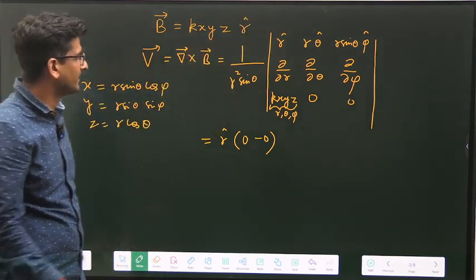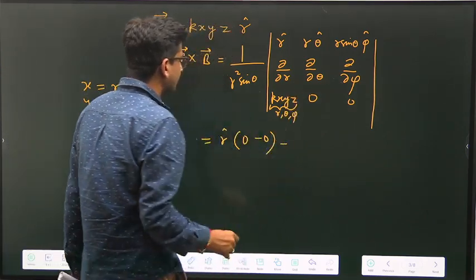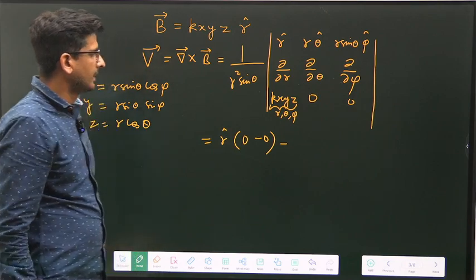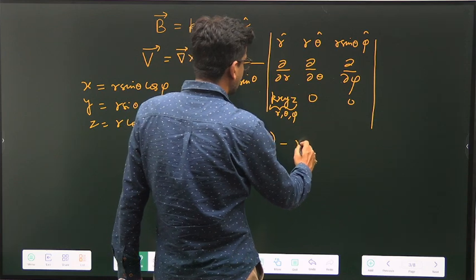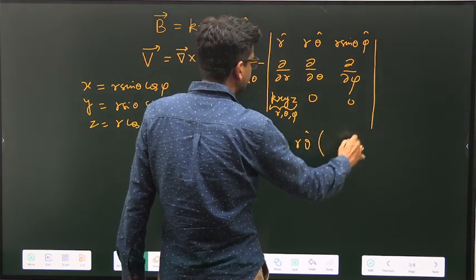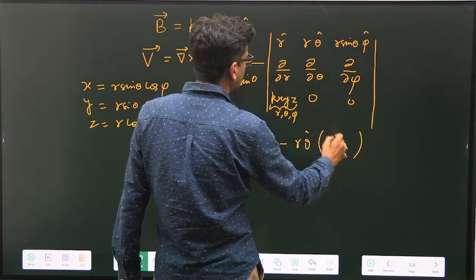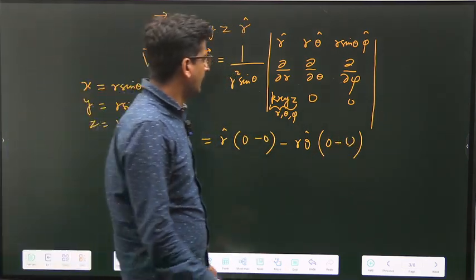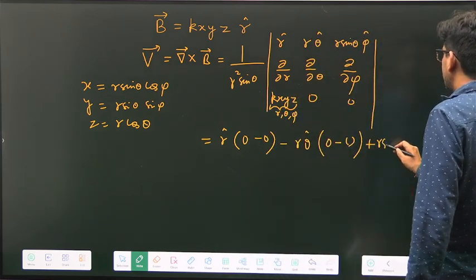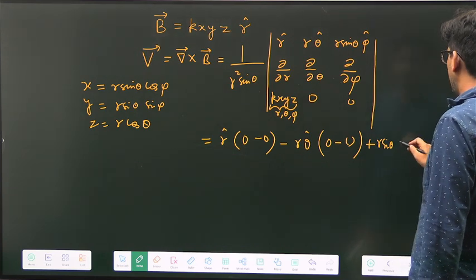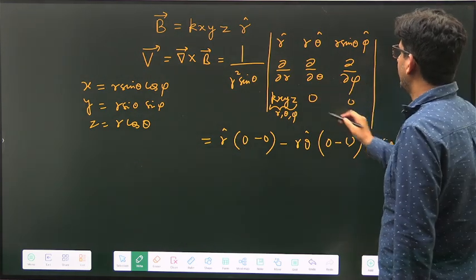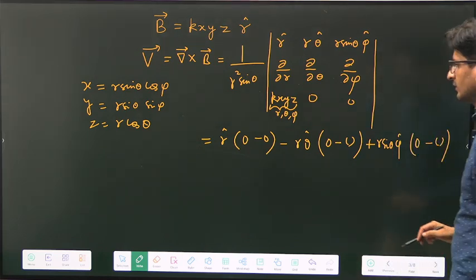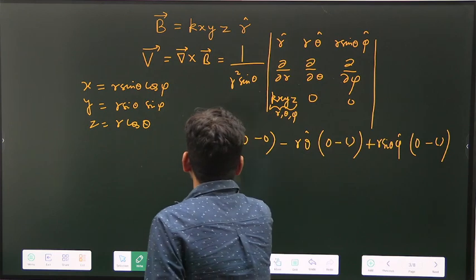Obviously curl of this vector which is in the R cap direction will not survive. And then minus outside, this will be 1 upon R squared sine theta, and minus R theta cap. And then you will have this which is zero minus you will get something here that can be calculated. And then plus R sine theta phi cap - here you will get zero minus again, because this is also function of theta, you will get something.